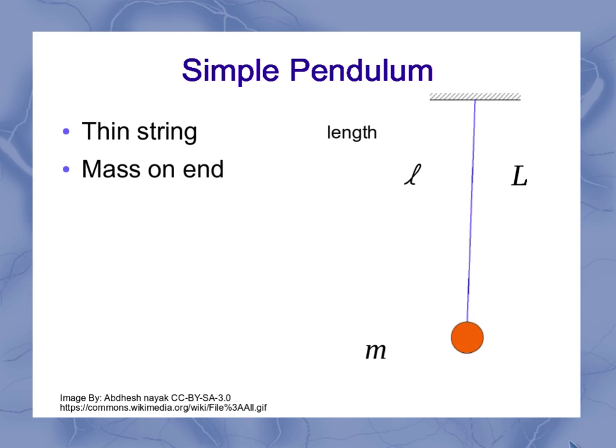There's got to be a mass out on the end of that string, and I'm going to give it the symbol of M. And the last thing is it has to be a small amplitude. Well, what does that mean?